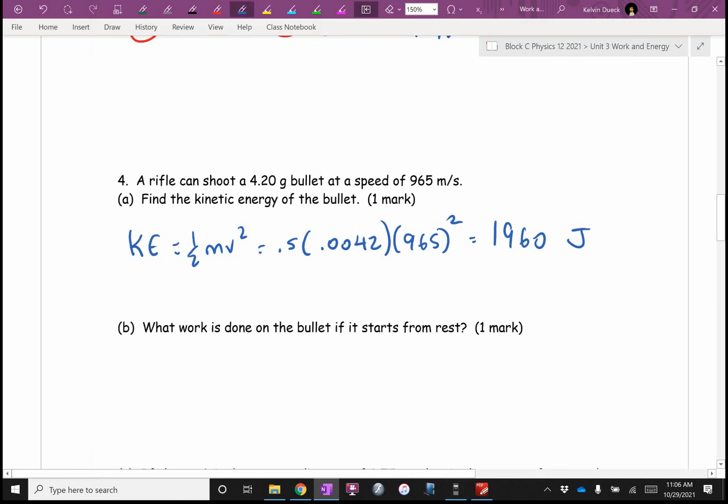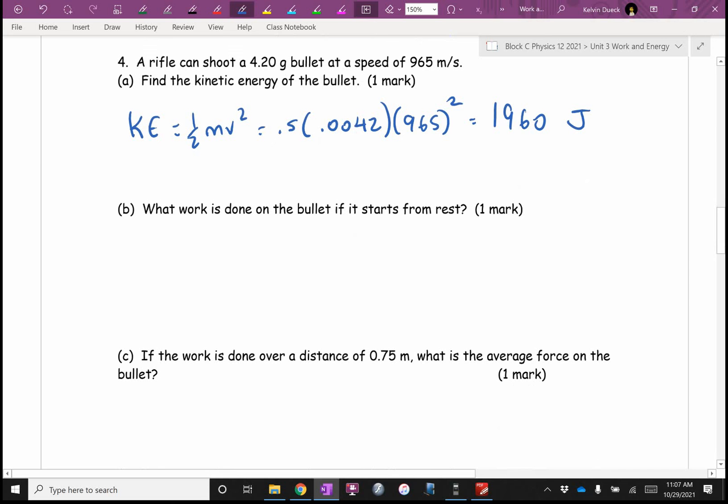That's also how much work the gun did on the bullet. The gun changed the bullet's kinetic energy, so that tells me how much energy the gun transferred to the bullet, how much energy I needed from the gunpowder. What work is done? Oh, here it is. What work is done on the bullet if it starts from rest? So you can't really go force times distance, but what you can do is say it's the change in potential plus the change in kinetic. No change in potential. What's the change in kinetic? I think 1960 joules, because there's my final kinetic energy and the initial was from rest.